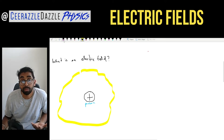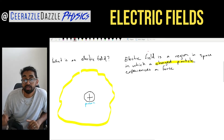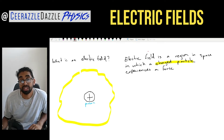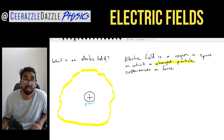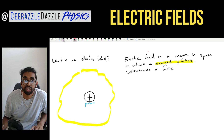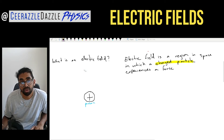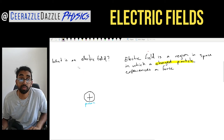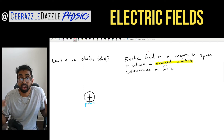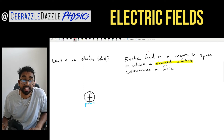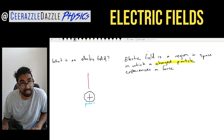Let me put down the formal definition. An electric field is a region in space in which a charged particle experiences a force. It doesn't actually look like the yellow region I drew — what it looks like uses things called electric field lines, which we use to represent the field. We can draw them using arrows.